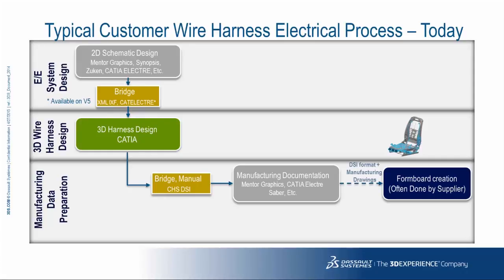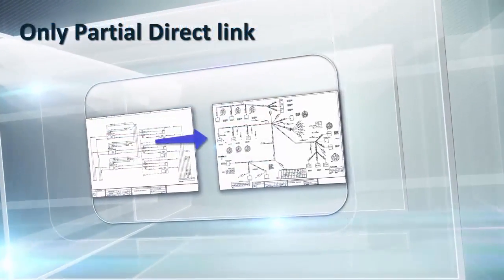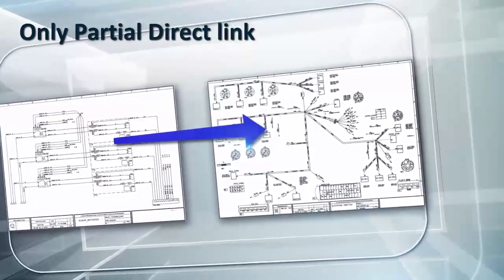The main challenge in this typical scenario are all the bridges and interfaces that are needed to provide the information from one process step to the next. Although different possibilities exist, they are all creating intermediate files that have limitations and sending information to the next step. There's no synchronization between the 3D harness design and the manufacturing documentation. This makes it cumbersome and very difficult to update the documentation while the design is changing.